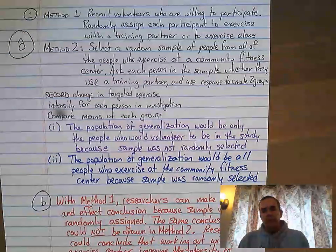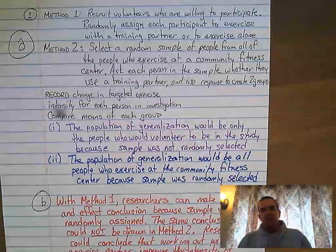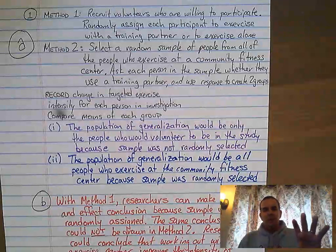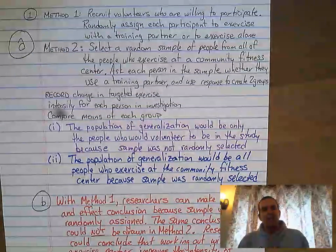The first question asks: what populations can you generalize to? This really comes down to how the groups were initially collected. Since method one called on volunteers, the population of generalization would only be the volunteers.